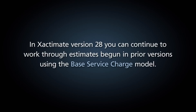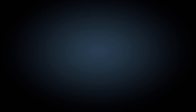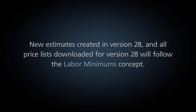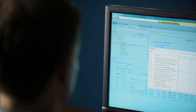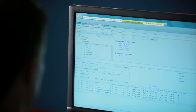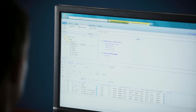Once Xactimate version 28 is installed, you'll need to be able to open and continue to work through estimates you'd already begun in prior versions using the base service charge model. Xactimate version 28 will recognize both your estimates and the price list from the prior version as using the base service charge model and allow you to continue to work on them as long as needed, just as you did in the prior version. Any new estimate you create in version 28, and all new Xactware price lists which you download into version 28, will follow the labor minimums concept. Estimators will still be able to manually use service charges if they prefer, but there will be no option to automatically apply base service charges with the new estimates you create in Xactimate version 28.